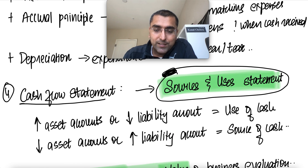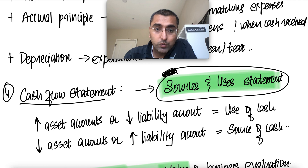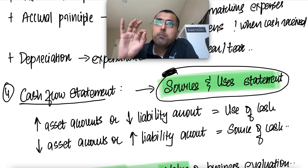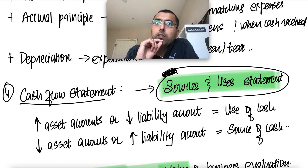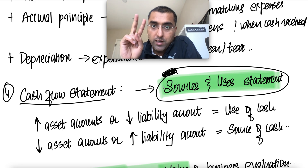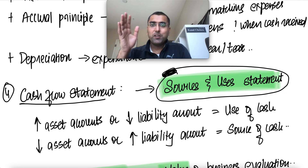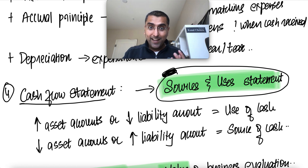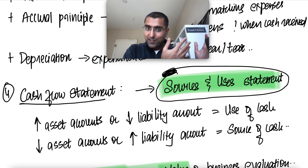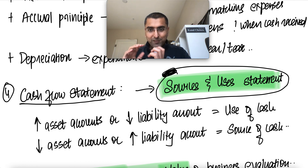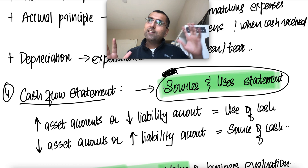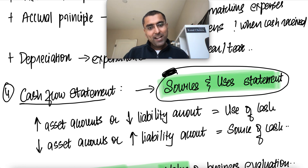The new thing introduced here for me was the sources and uses statement — I didn't learn this in my accounting class. Let's understand what it is. We can build a sources and uses statement from the balance sheet. There are only two ways a company can generate cash, and only two ways it can use that cash. You want to find out how it's getting cash and how it's using it — sources and uses of cash.